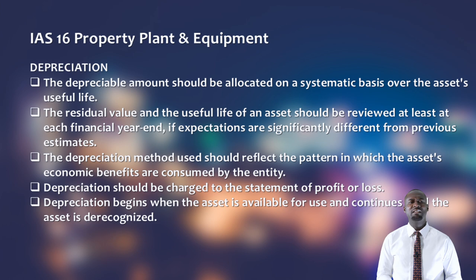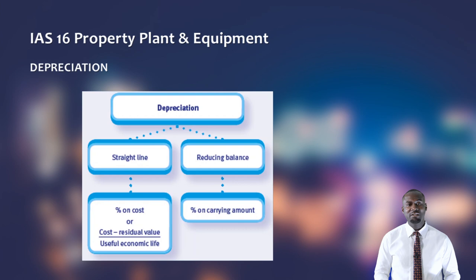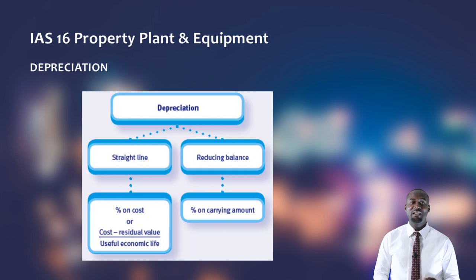The depreciation method used should reflect the pattern in which the asset's economic benefits are consumed by the entity, and depreciation should be charged to the statement of profit or loss. The two common methods are the straight-line method and the reducing balance method. For straight-line, you take the initial cost less the residual value, divided by the useful economic life. For reducing balance, you multiply the depreciation rate by the carrying amount of the asset.